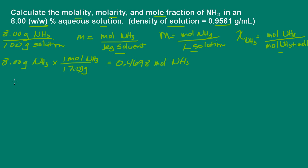Okay. So now let's determine how much solvent we have. Well, we know we have 100 grams of solution and 8 grams of ammonia. So the grams of solvent would be equal to 100 grams of solution minus the 8 grams of ammonia. And that would give us 92 grams of water.